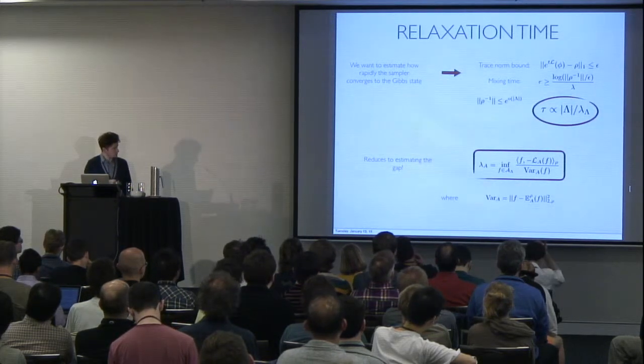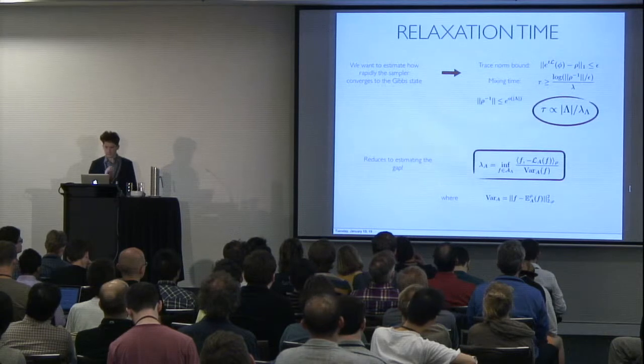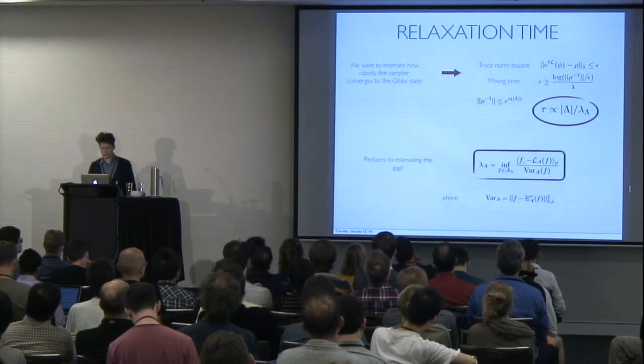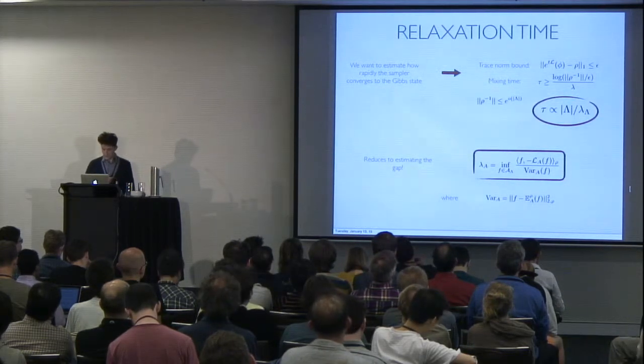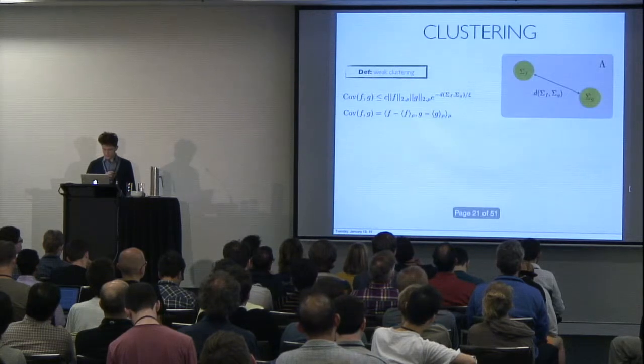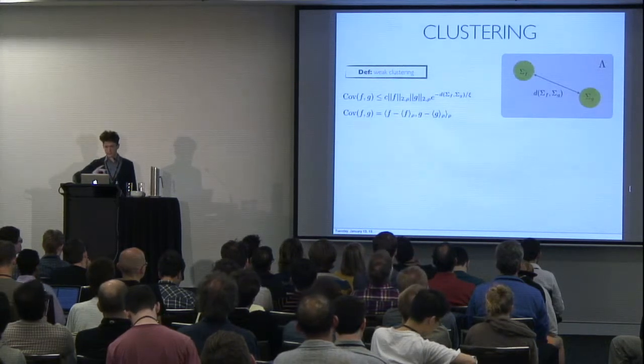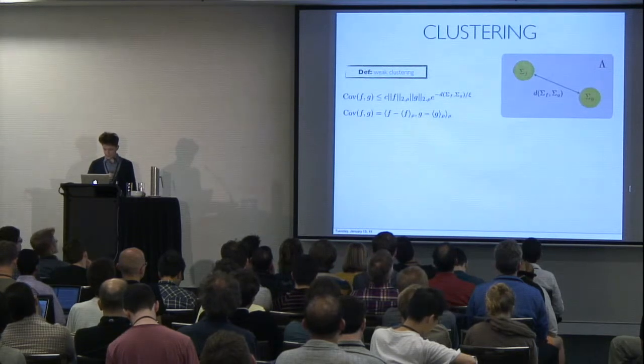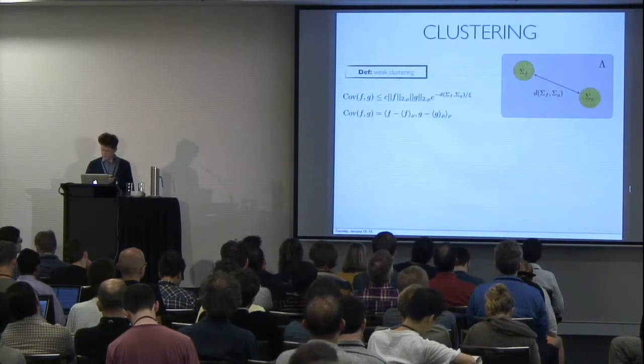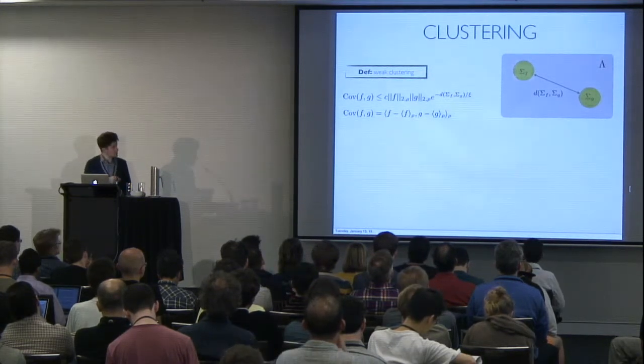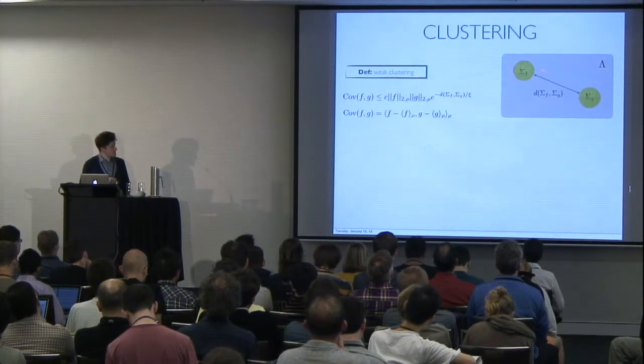So for now we're going to consider, we're going to ignore this term and say that your system converges rapidly if it's gapped. The other side of the theorem is estimating correlations in the stationary state, in the Gibbs state. So here I'm going to introduce a bunch of equations that you shouldn't pay too much attention to, but rather look at the picture.